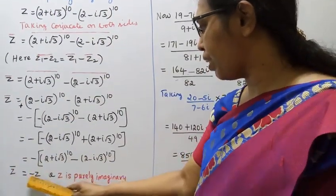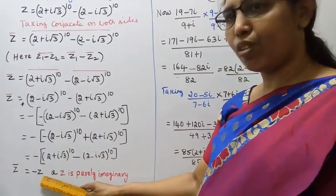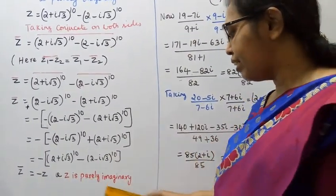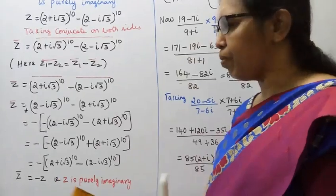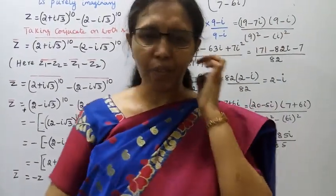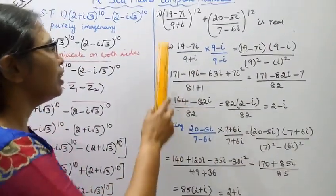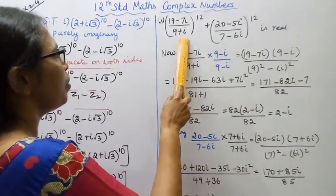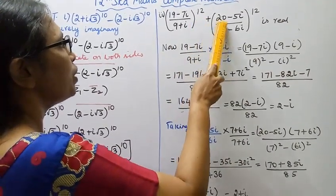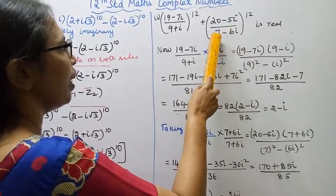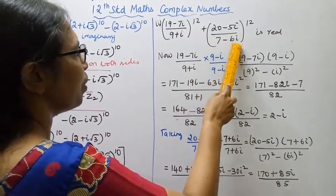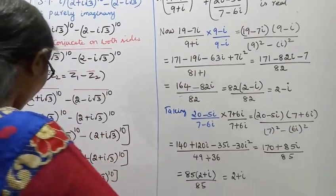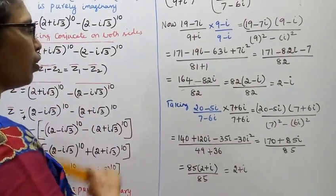Second subdivision: show that (2 + i)^12 + (2 − i)^12 is real. For z to be real, the condition is z̄ = z. So we need to show z̄ = z.